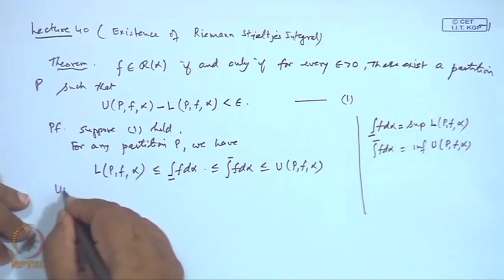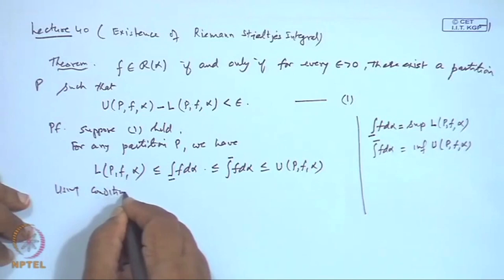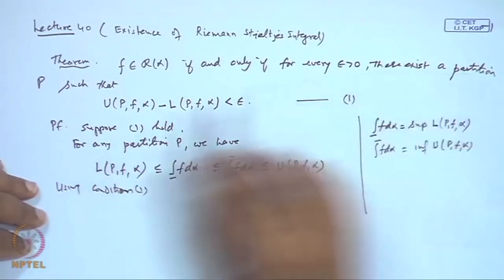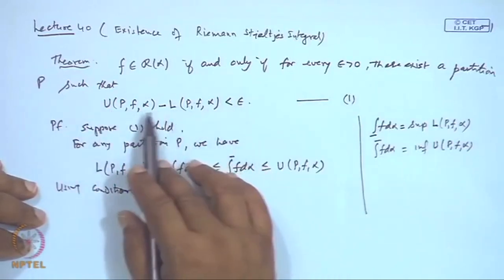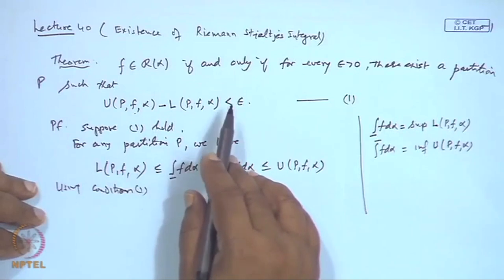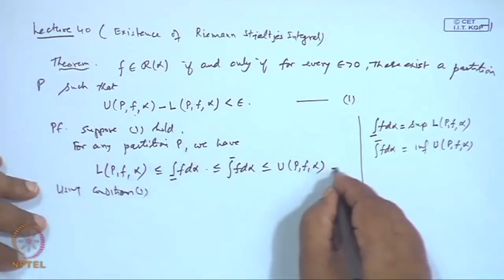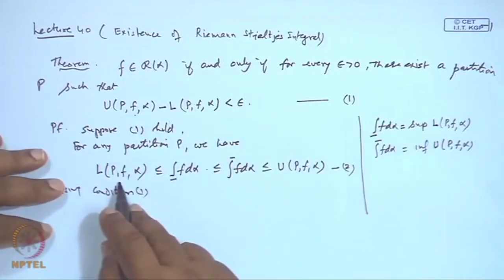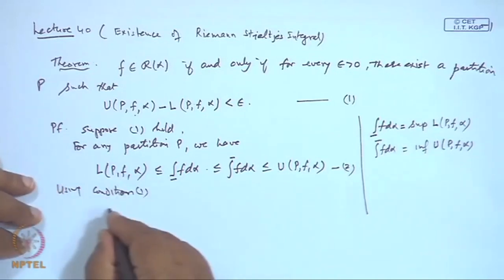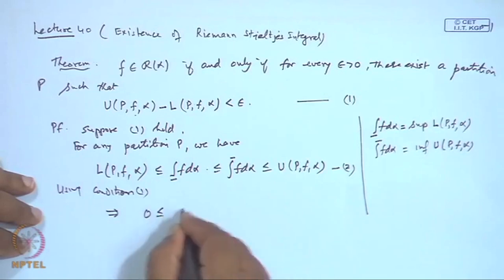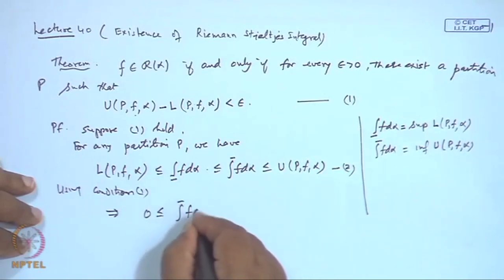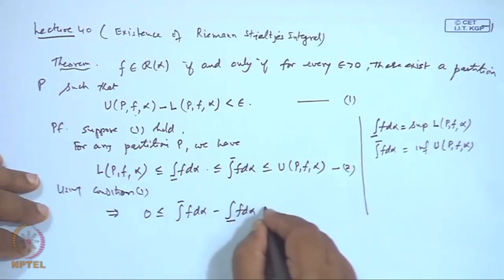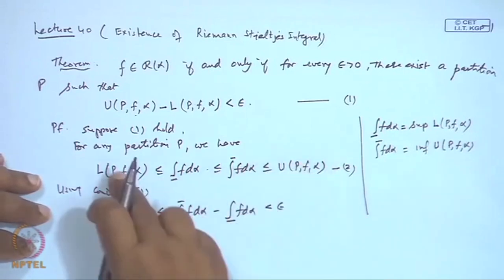Using Condition 1, there exists a partition P such that the difference between upper sum and lower sum is less than ε. Since the inequality in step 2 is true for any partition, for this particular partition we see that 0 ≤ upper integral minus lower integral < ε, because this difference is less than ε.